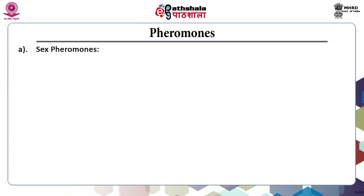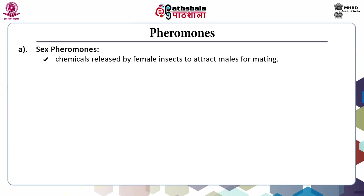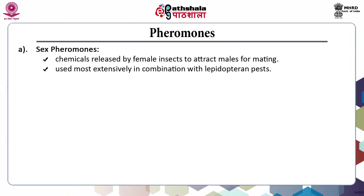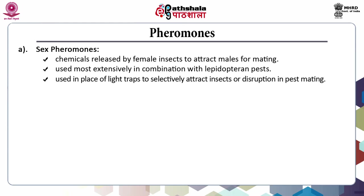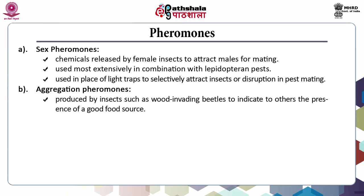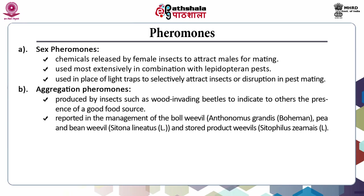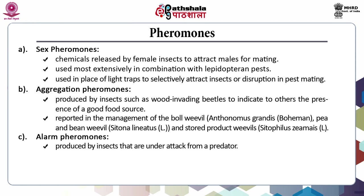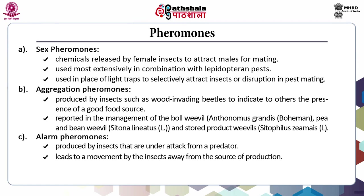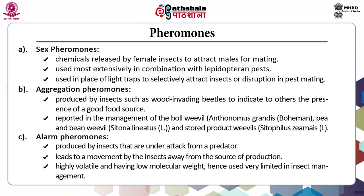Sex aggregation and alarm pheromones come under the releaser category and are widely used in insect pest management. Sex pheromones are chemicals released by female insects to attract males for mating, and are used most extensively in combination with Lepidopteran pests. They are used in place of light traps to selectively attract insects or disrupt pest mating. Aggregation pheromones are produced by insects such as wood-invading beetles to indicate to others the presence of a good food source. They are reported in the management of the boll weevil (Anthonomus grandis), pea and seed weevils, Sitona lineatus and stored product weevils Cytophilus oryzae. Alarm pheromones are produced by insects under attack from a predator, leading to movement away from the source of production. They are highly volatile and have low molecular weight.